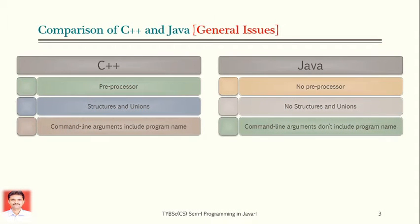Let us start with the comparison of Java with C++ with respect to some general issues. As you know, C++ is a very popular object-oriented programming language. It was widely used before the advent of Java. Java resembles the syntax of C++, but there are several differences. Java has left out some of the complex and confusing concepts that were used in C++; some concepts are modified by Java and some are newly added.